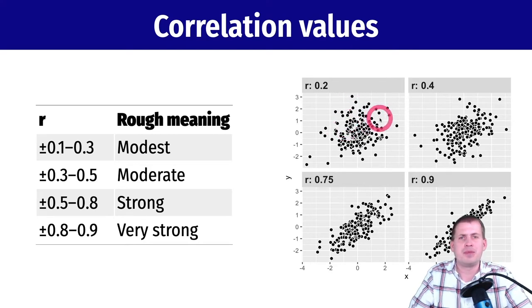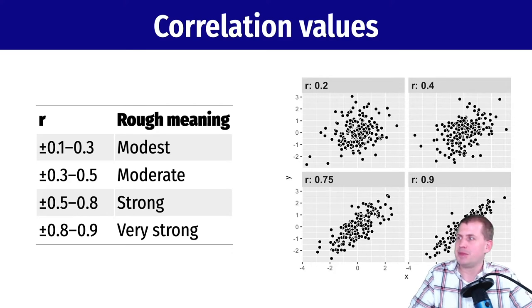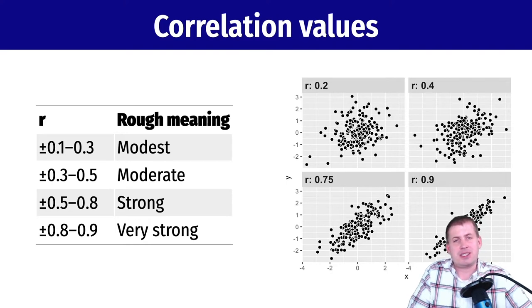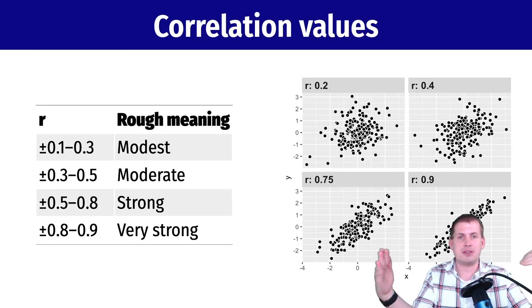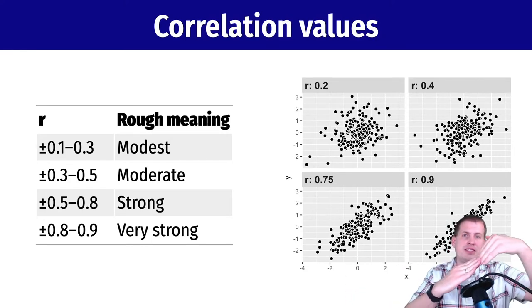The general guidelines—these are just rough meanings for these numbers: you can have modest correlation, moderate, strong, very strong. This is just one scale; other stats classes will teach you other scales. There's no official translation between numbers and labels. This gives you language to talk about how these things are correlated. If you're visualizing two variables like humidity and temperature, you can draw a scatter plot and look at the points and see how tightly clustered they are and if they make some sort of shape.